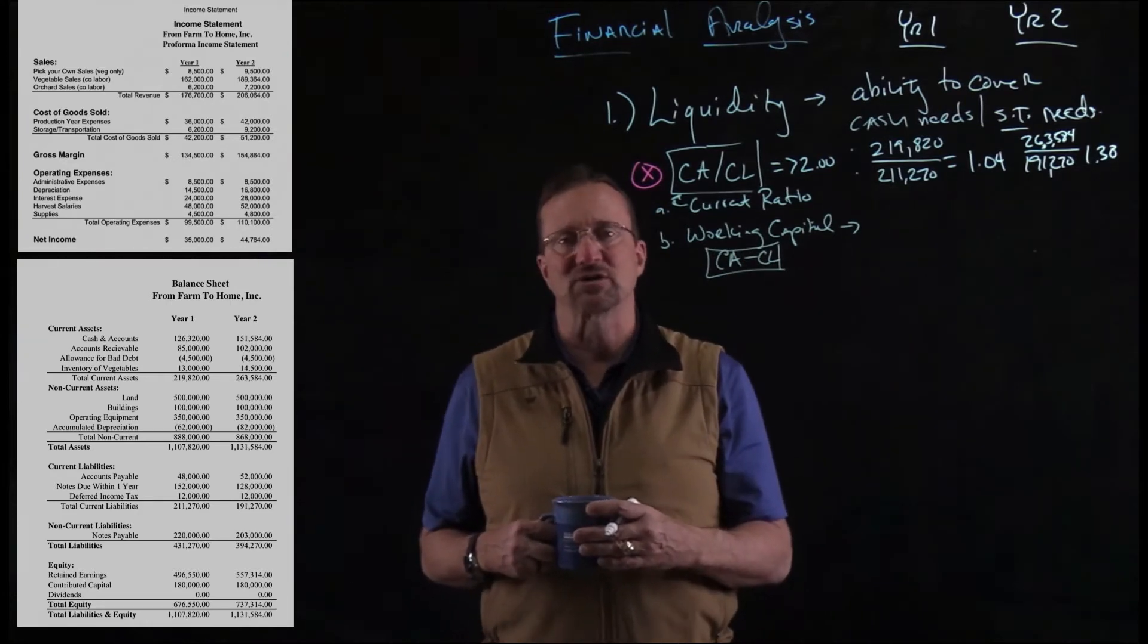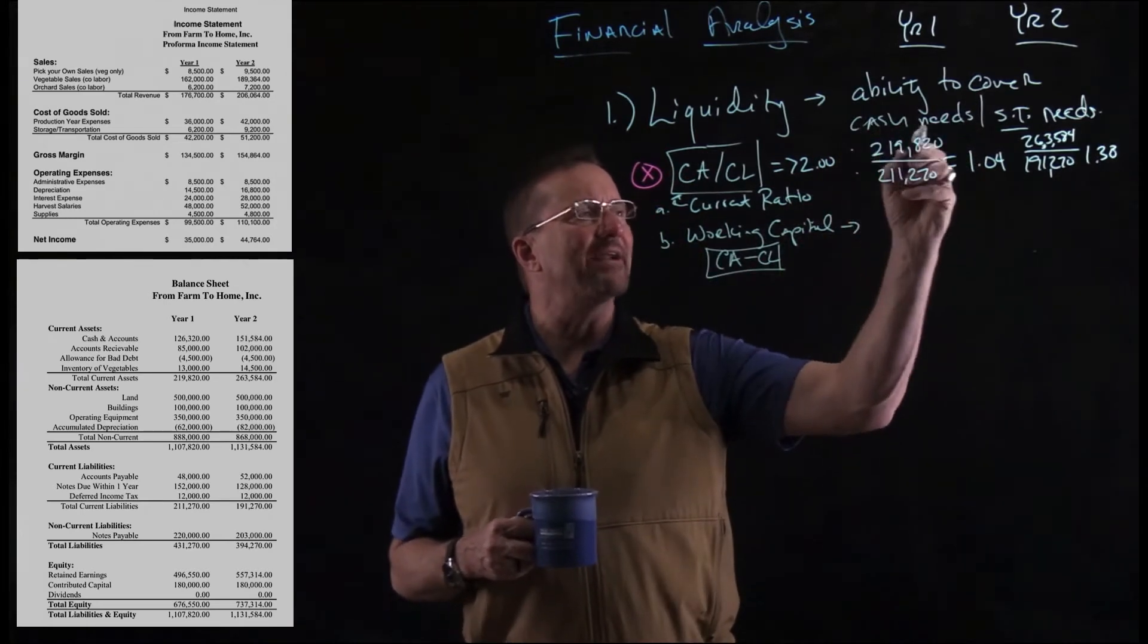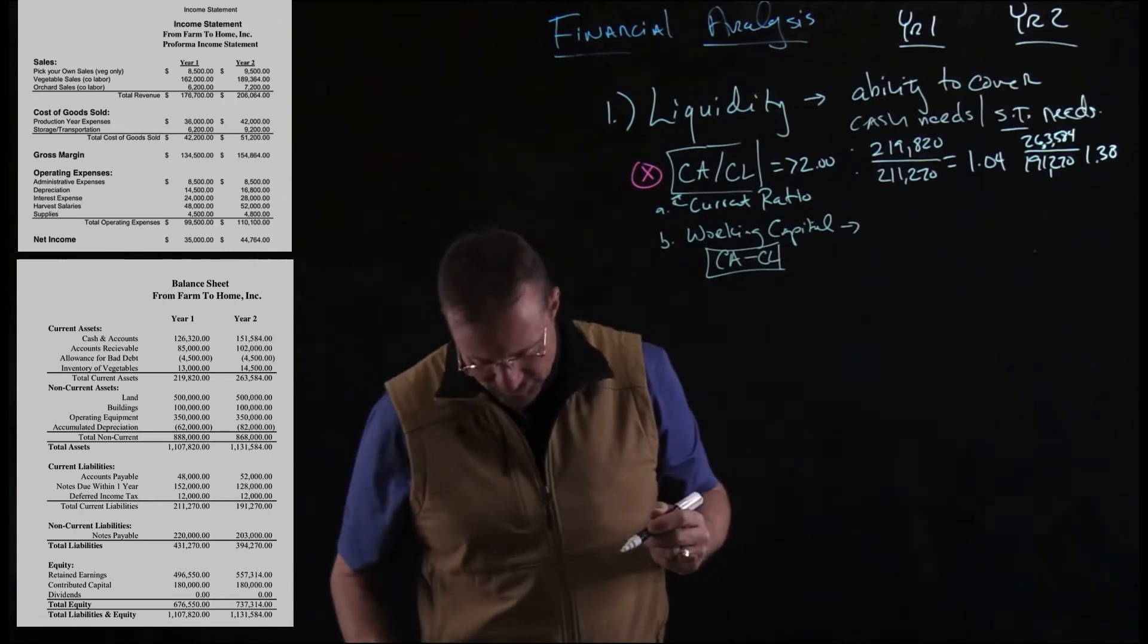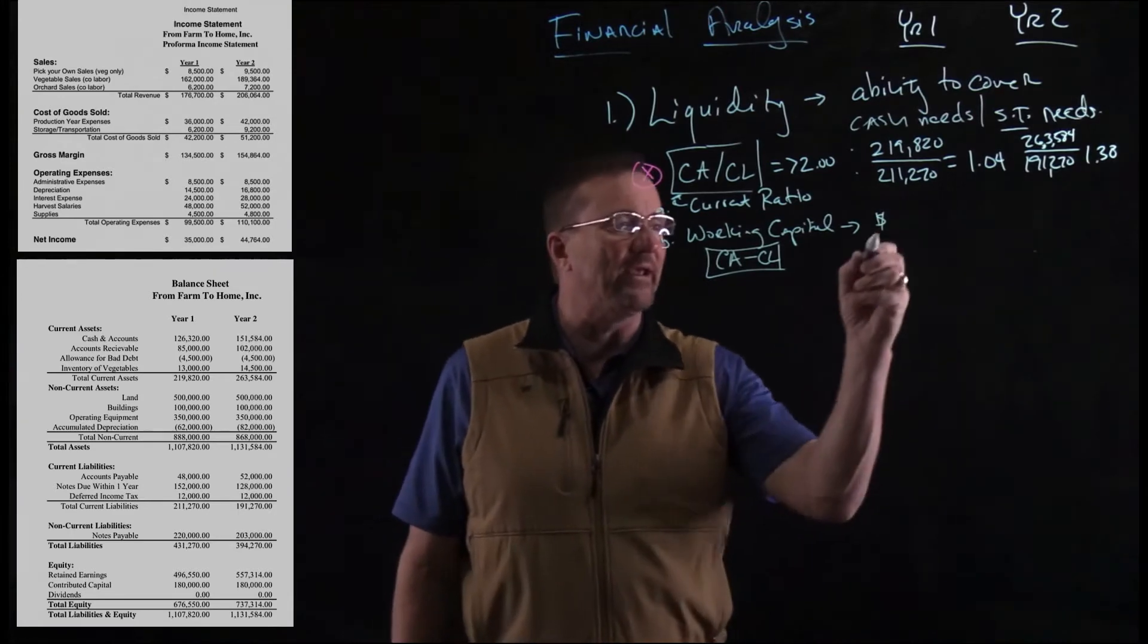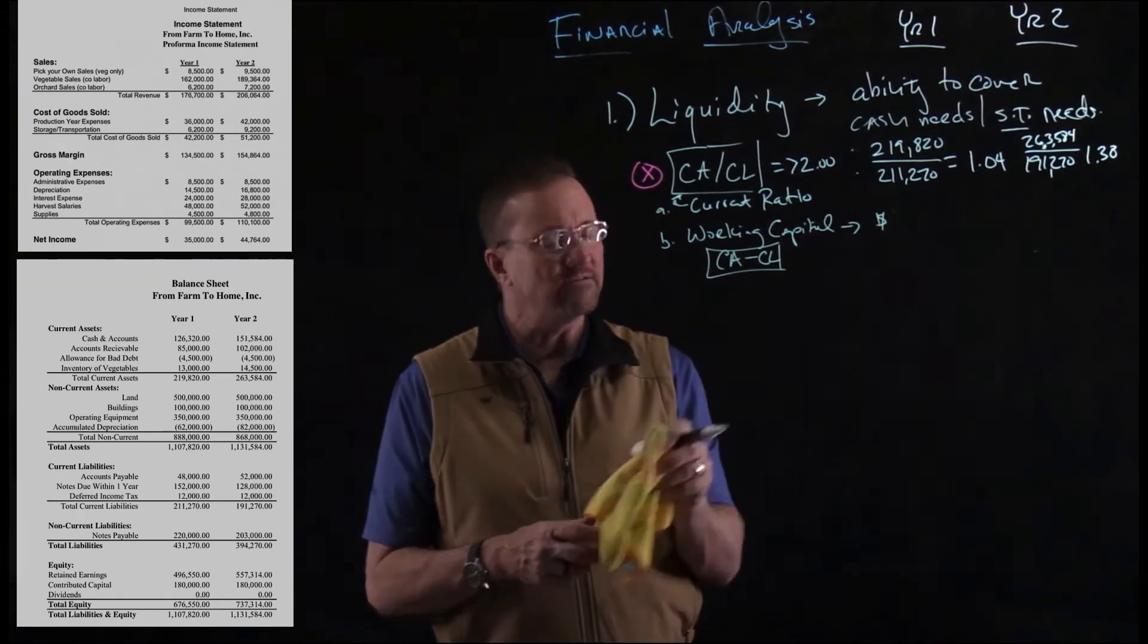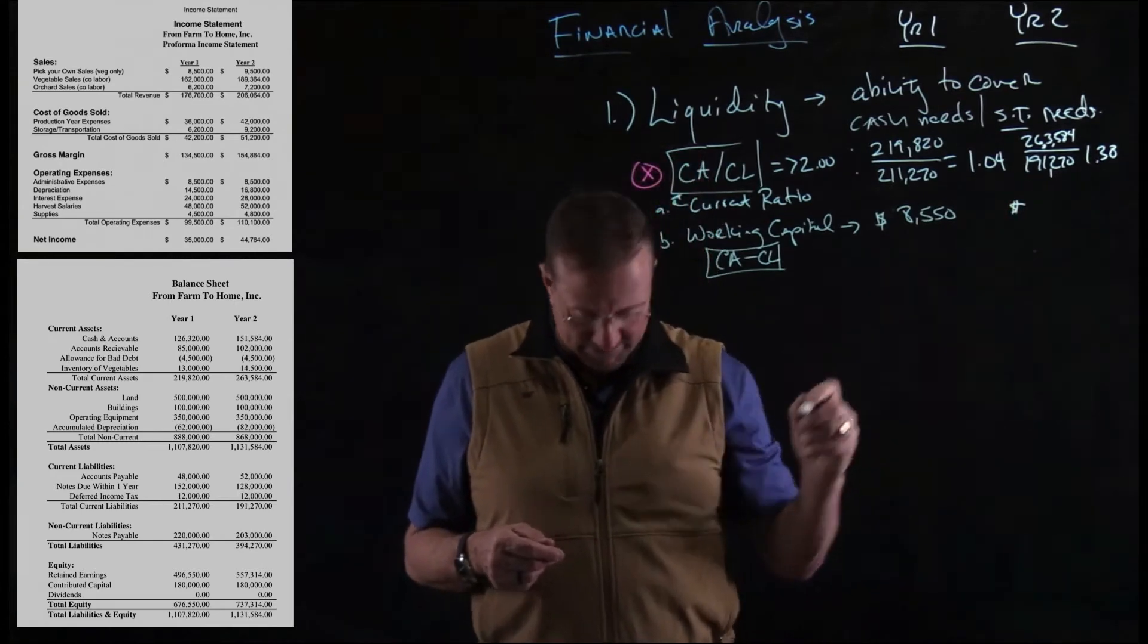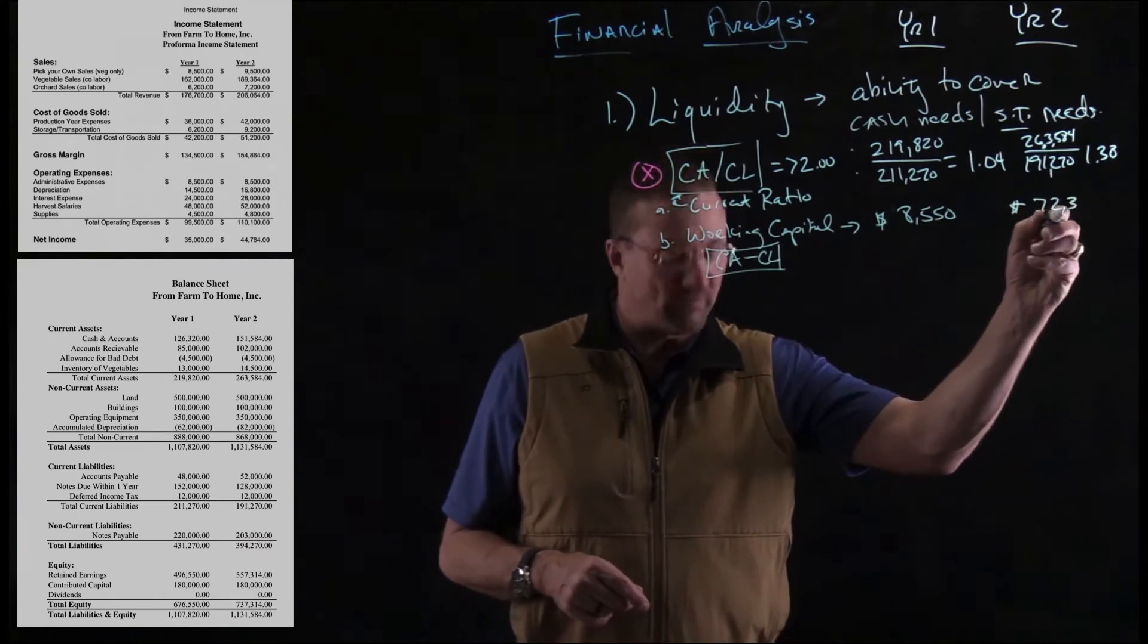In other words, we're just looking at how much extra cash are we able to work with. When we talk about liquidity, it's the ability to cover our cash needs, our short-term needs by covering those debts. And so what extra money do we have? We're simply just subtracting current assets minus current liabilities. And if we subtract those two in our first year, this is a dollar value, we get $8,550 in money. So again, not a lot of extra money in year two.